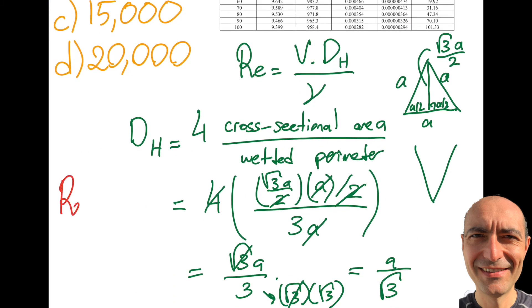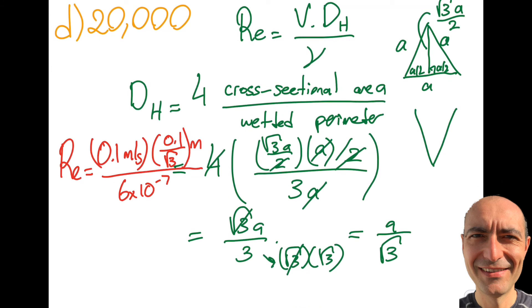I will write the Reynolds number equals velocity 0.1 meter per second, the hydraulic diameter is 0.1 meters divided by square root of three, divided by six times 10 to the minus seven. You can use 6.1 to be more accurate, but this is the best I can come up with. These two will cancel, this will be minus five, so it's 10 to the 5, which is 100,000, divided by six square root of three.